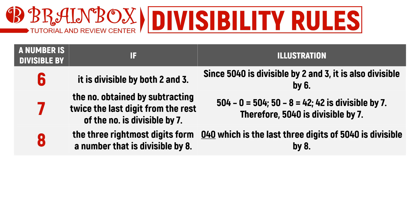Checking the divisibility rule for 8 is similar to the rule for 4. The difference is that we take the last three digits and divide those by 8. Using 5040, we look at the last three digits: 040. Since 40 is divisible by 8, we can conclude that 5040 is also divisible by 8. This method works because 1000 is a multiple of 8, so everything beyond the thousands digit can be divided cleanly.